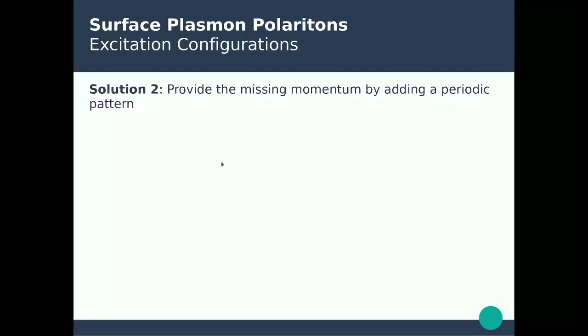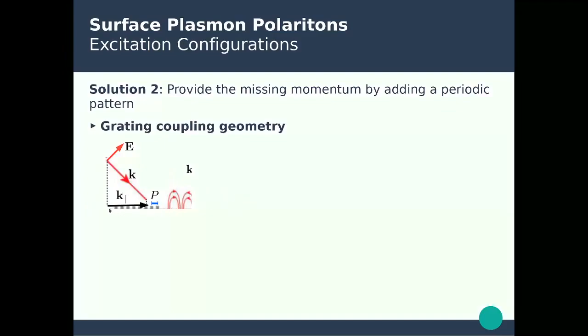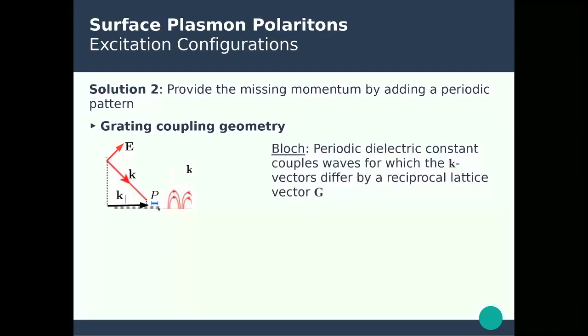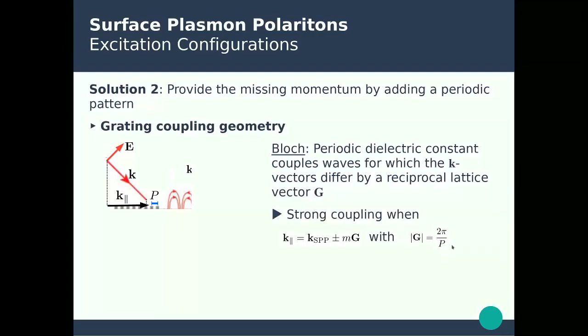The second solution to excite SPPs is to use gratings — periodic patterns that provide the missing momentum. If you have a metallic surface with a grating pattern, protrusions with periodicity P, then through the Bloch theorem you can provide an additional reciprocal lattice vector G equal to 2 pi over P. This additional momentum from the grating can then be used to excite the SPP.